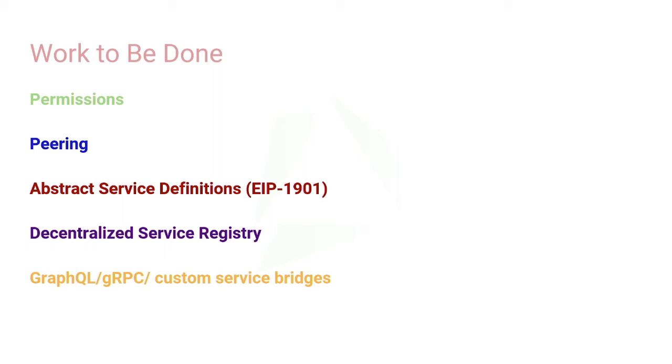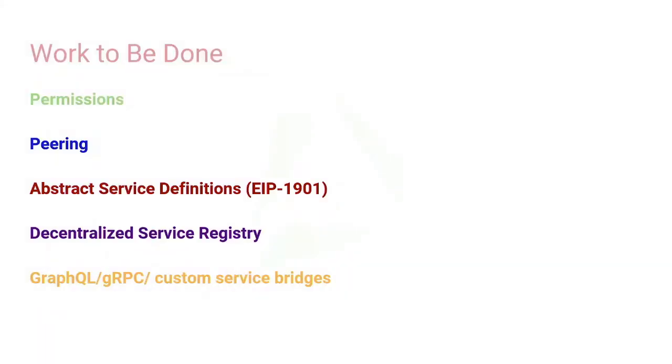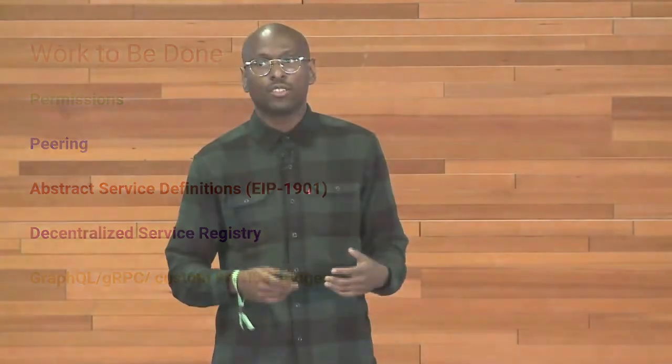Shane talked earlier about abstract service definitions using OpenRPC. Imagine it doesn't really matter what client your dApp connects to — you just want an Ethereum client. Using OpenRPC, you make a specification that says 'just give me an ETH client.' This is already an EIP — EIP 1901 — which allows you as a developer to abstractly say 'give me a service that implements this description,' and the network will install a matching service, start it, and handle the request. The other thing is a decentralized service registry, which you can view as an app store for decentralized services.